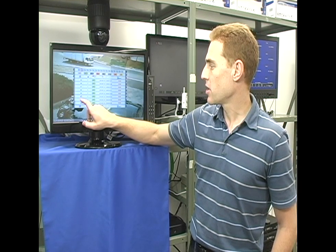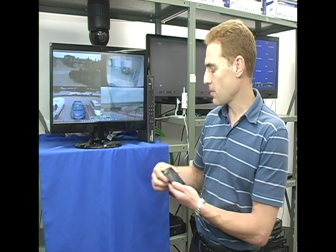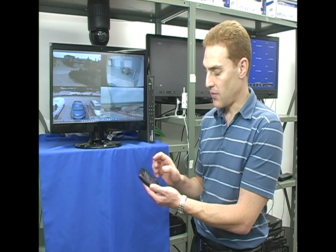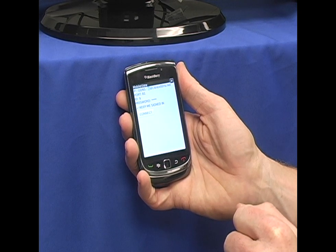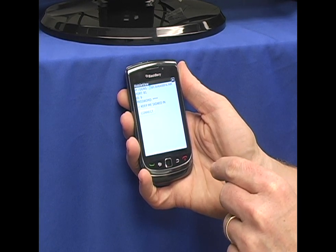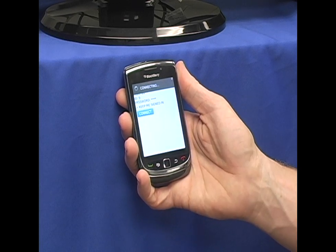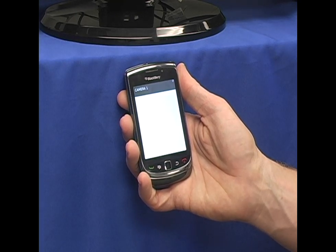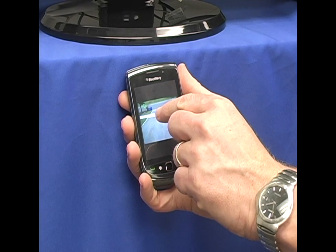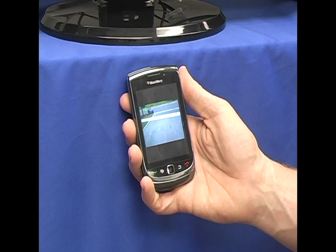This system also supports remote viewing over smartphones. I've got my Blackberry over here. I have an app, I click on the app and I'll click connect. Right now once again using touchscreen operation I'm connecting wirelessly over the 3G network and I can see my home. I can see the driveway and I can see that the garbage and recycling hasn't been collected.